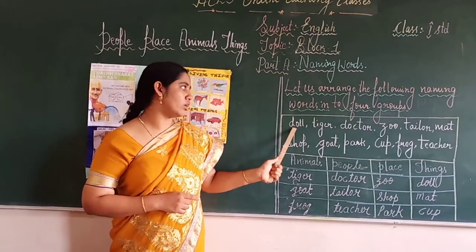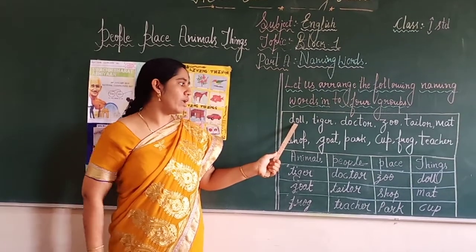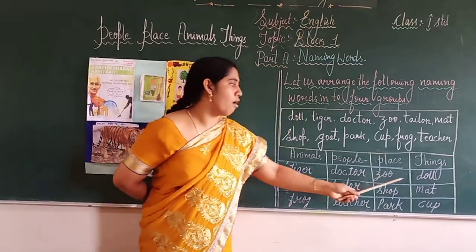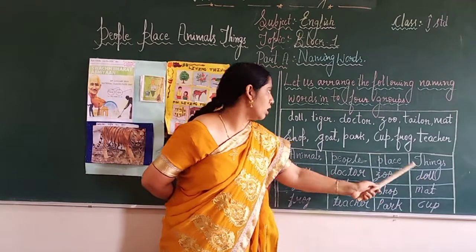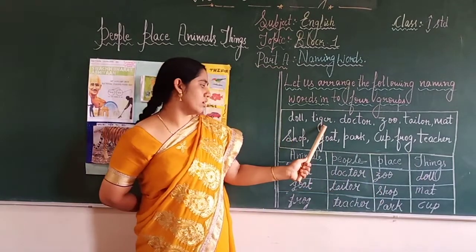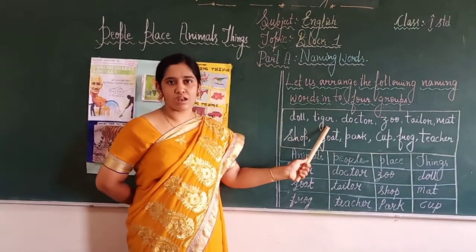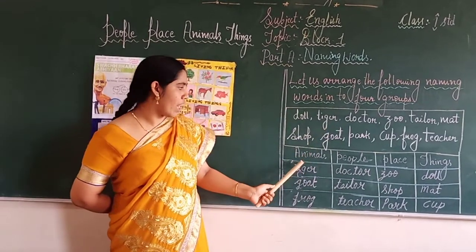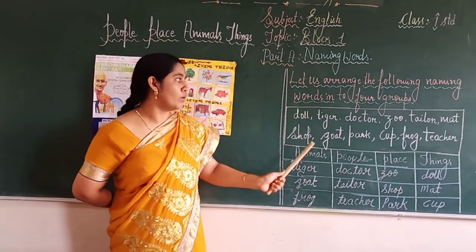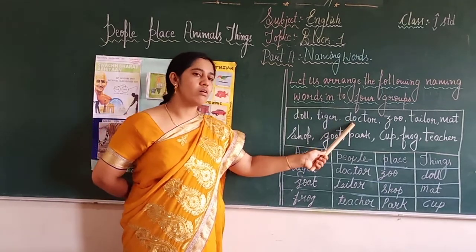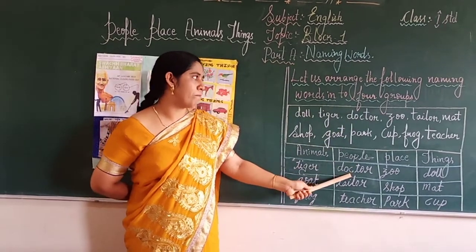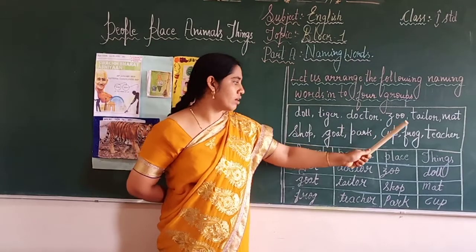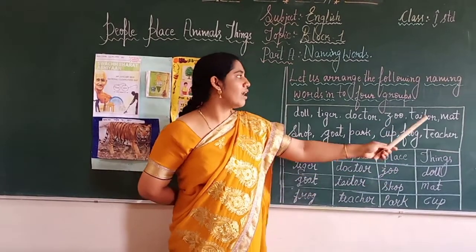First, doll — D-O-L-L — doll. Doll is the name of a thing. Tiger — tiger is the name of an animal, so it comes under the animals group. Doctor — it comes under the group of people. Zoo — it comes under the group of places.